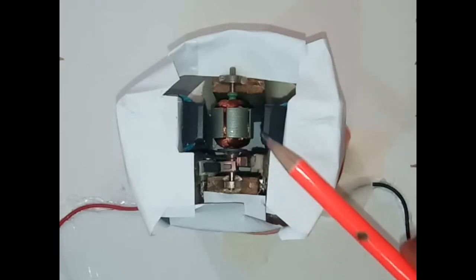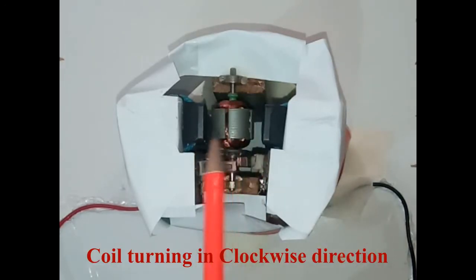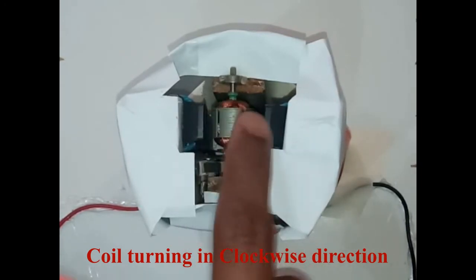So this is the internal view of a simple DC motor. I have connected to a battery. Let's switch on and check. So now it is rotating in this way. That is clockwise direction.